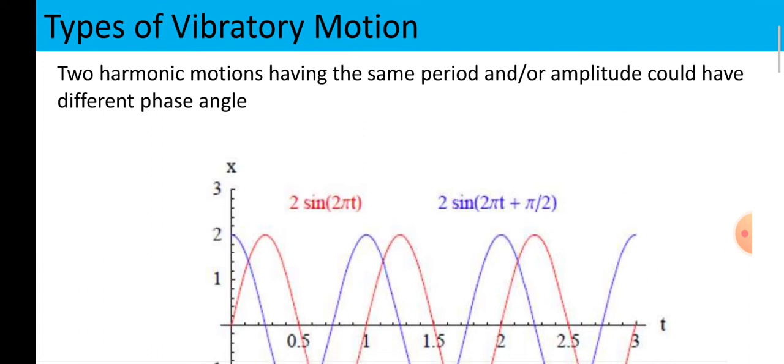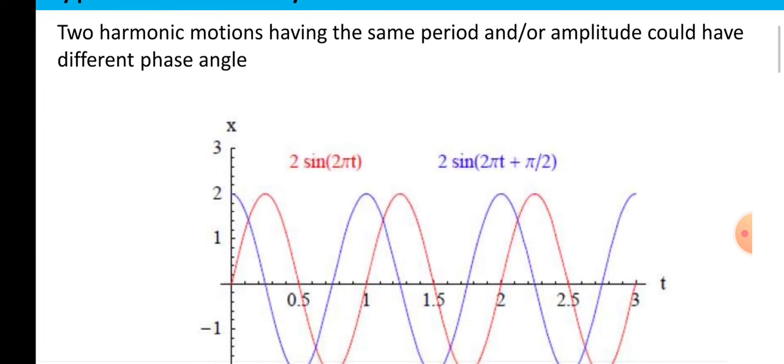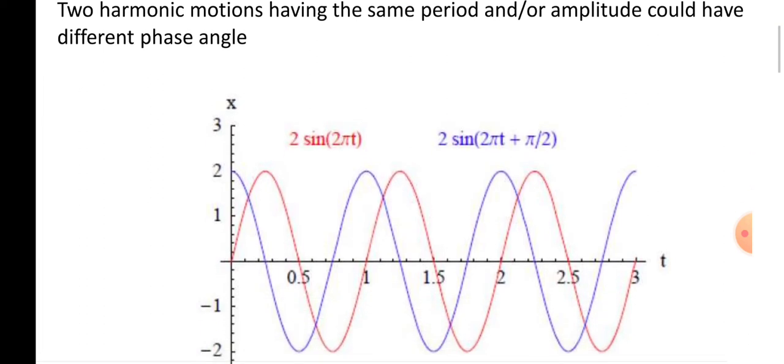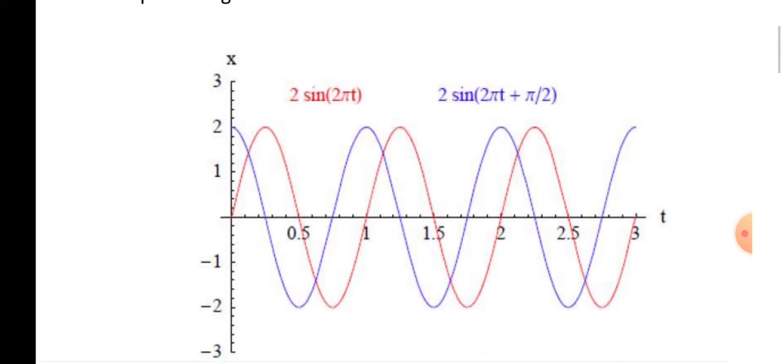If there are two harmonic motions having the same period and amplitude but different phase angles, look at this here. The red graph shows 2 sine 2 pi t while the blue line shows 2 sine 2 pi t plus pi by 2. So, pi by 2 is the phase angle between these two.